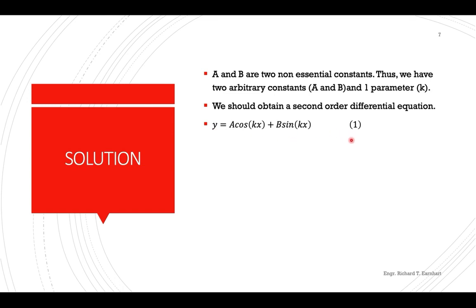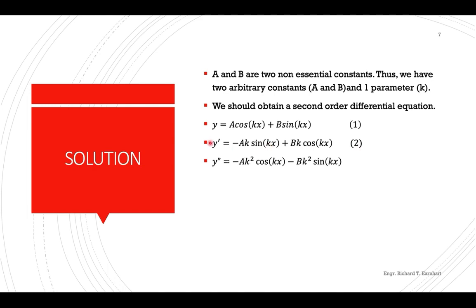We differentiate the original equation twice. The first equation is the original. Differentiating gives y prime: the derivative of cosine is negative sine, times k from the derivative of kx, plus the derivative of sine(kx) which is cosine(kx) times k. Differentiating again gives y double prime; the derivative of sine is cosine, giving k squared, and the derivative of cosine is negative sine, giving another k squared term.